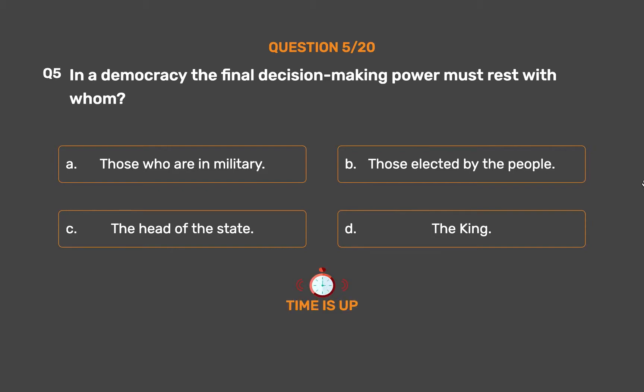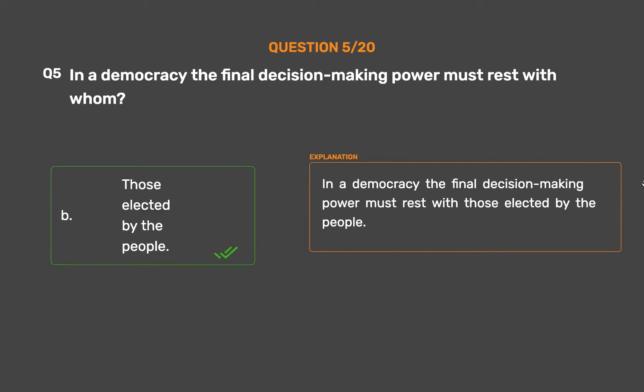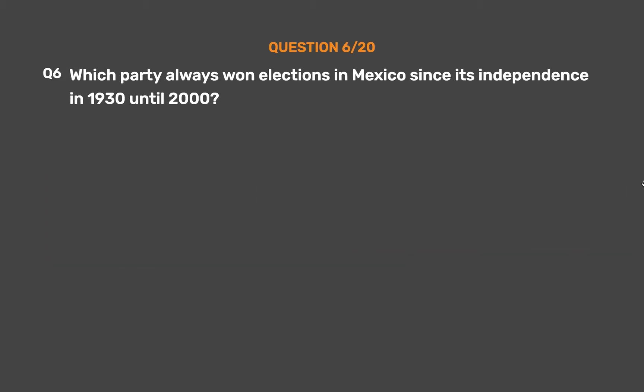The correct answer is Option B: Those elected by the people. In a democracy the final decision-making power must rest with those elected by the people.